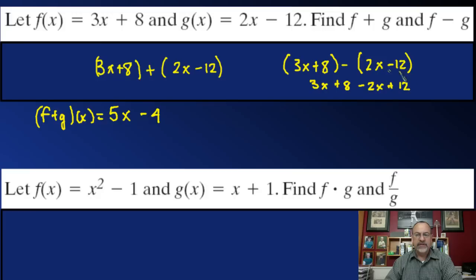Parentheses will help ensure that you don't simply take the opposite of the 2x and forget about the 12. Then we have 3x minus 2x, which is x, and then we have 8 plus 12, which would be 20. So this would be f minus g of x, subtracting the two functions.